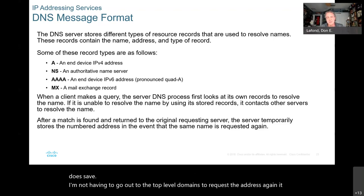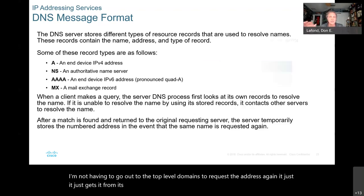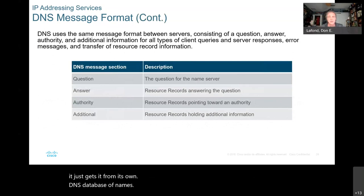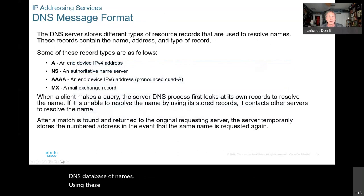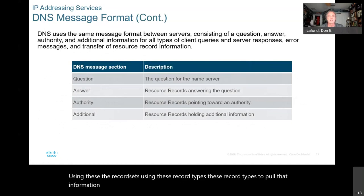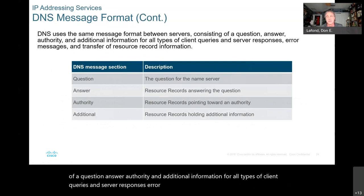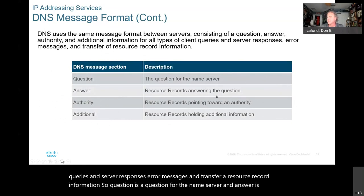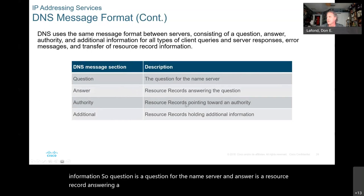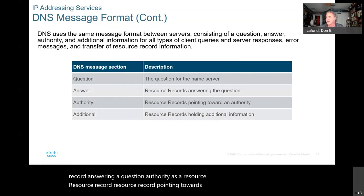The DNS server stores different types of resource records used to resolve names, containing the name, address, and type of record. Record types include: A for an end device IPv4 address, NS for authoritative name server, AAAA for an end device IPv6 address, and MX for a mail exchange record. DNS uses the same message format between servers consisting of a question, answer, authority, and additional information for all types of client queries and server responses.